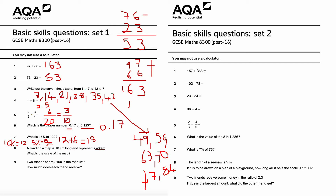Question number eight: a road on a map is 10 centimeters long and represents 400 meters. What is the scale of the map? Writing it as 10 to 400 as a ratio, then simplifying by dividing both sides by 10: 10 divided by 10 is 1, and 400 divided by 10 is 40. So the scale of the map is 1 to 40 — every one centimeter represents 40 meters.